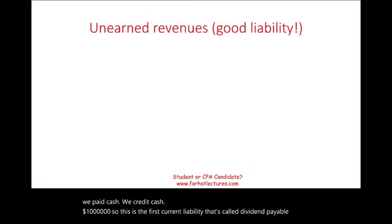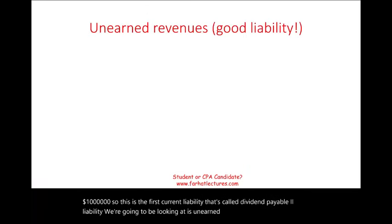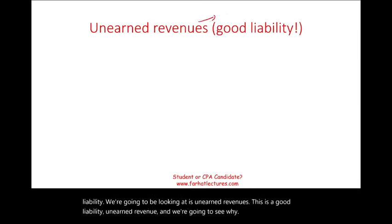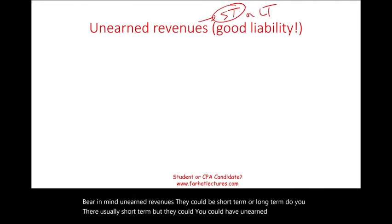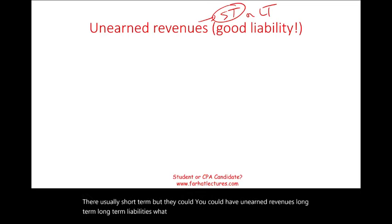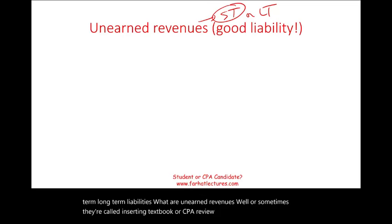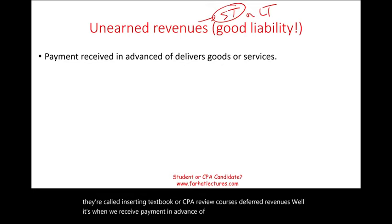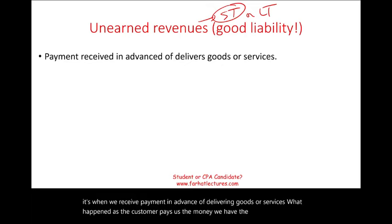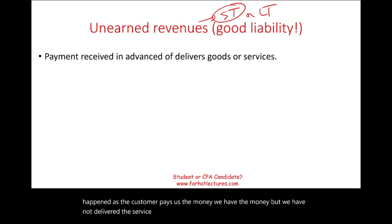The second liability is unearned revenues — also called deferred revenues. This is actually a good liability. Unearned revenues occur when we receive payment in advance of delivering goods or services. The customer pays us the money, but we have not yet delivered the service, so it is not yet revenue. Types of businesses with this liability include magazine subscriptions, airlines, sports events, advance ticket purchases, hotels, and concerts — any time you pay for something and receive the benefit later.